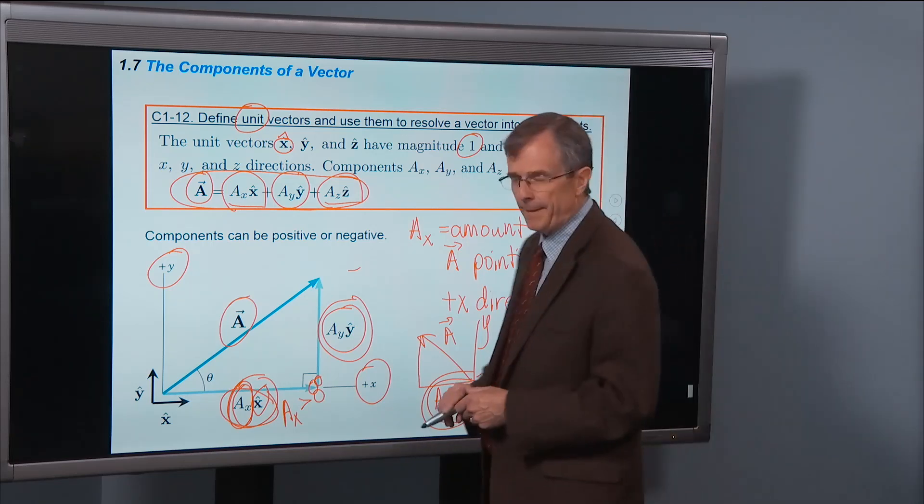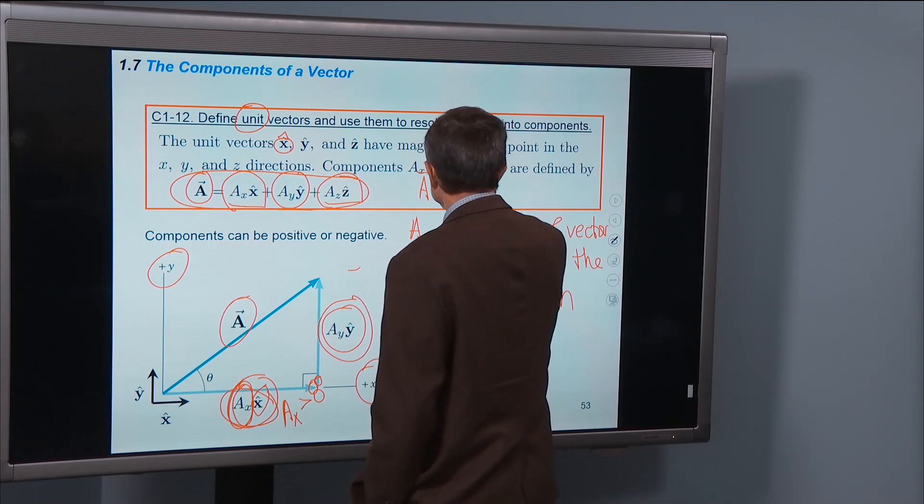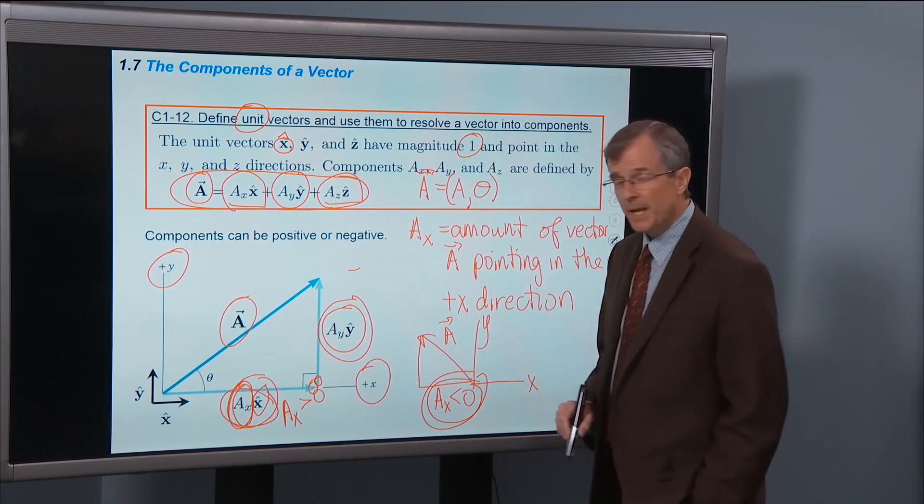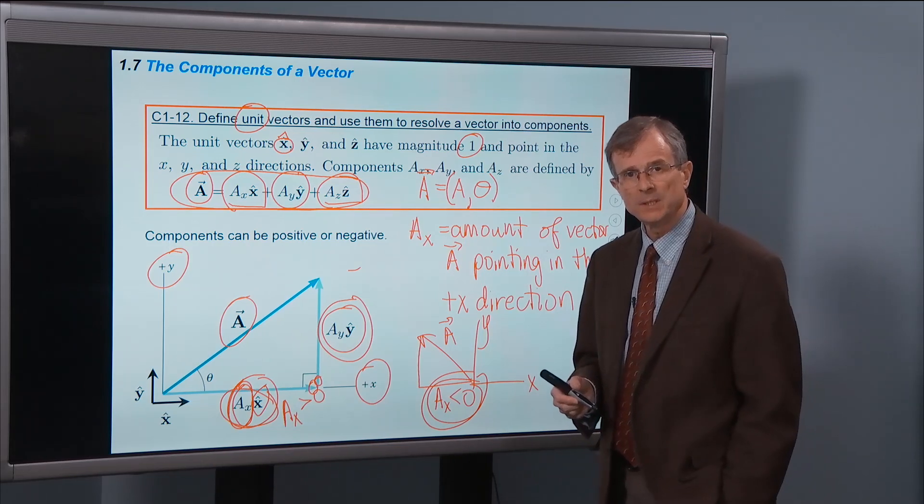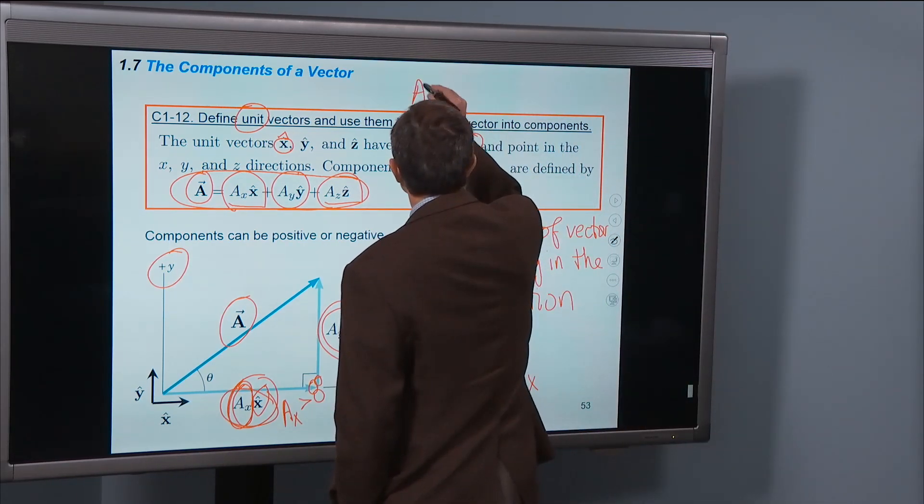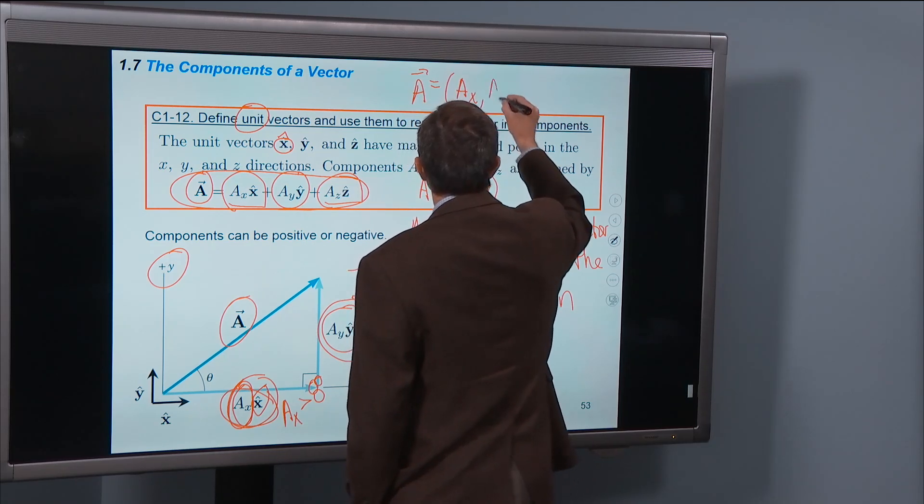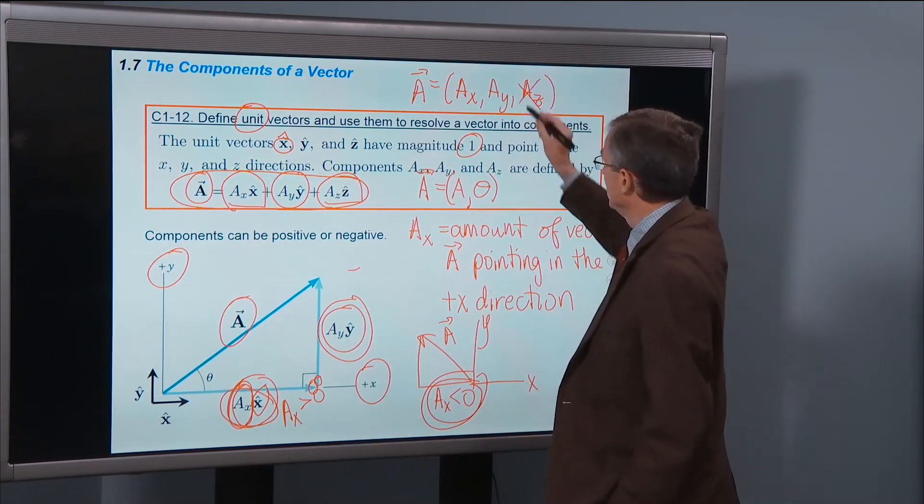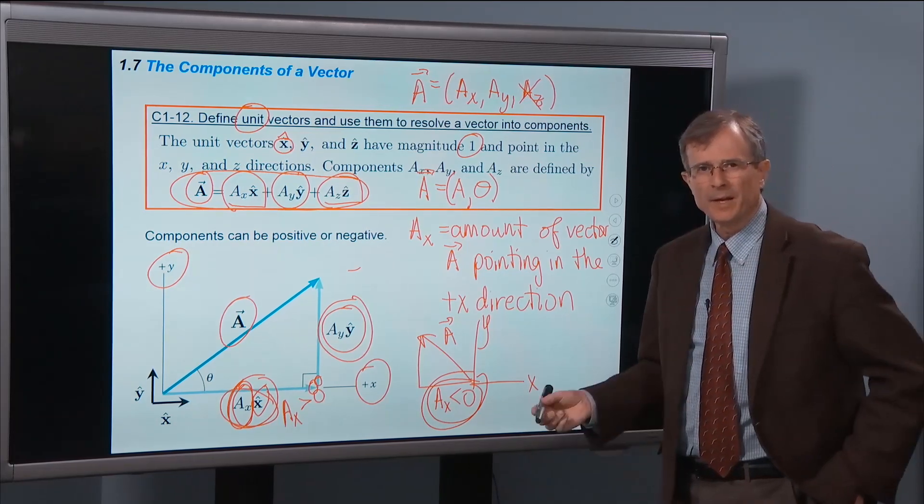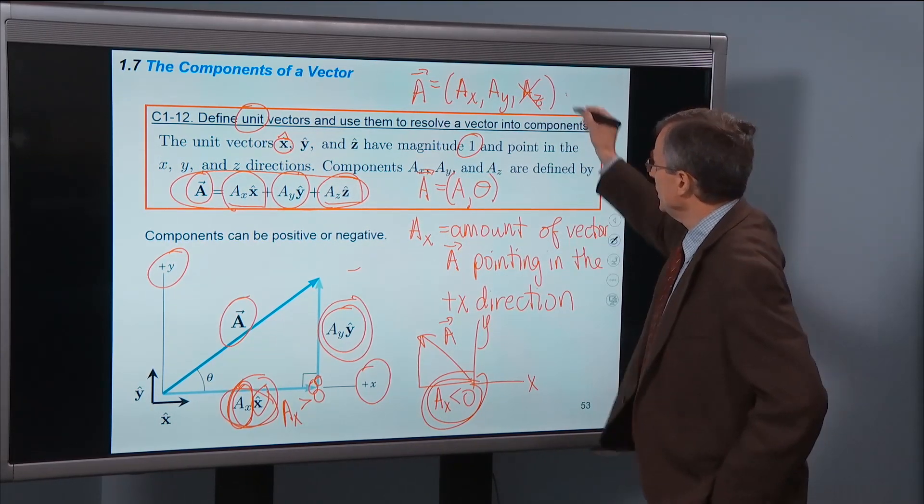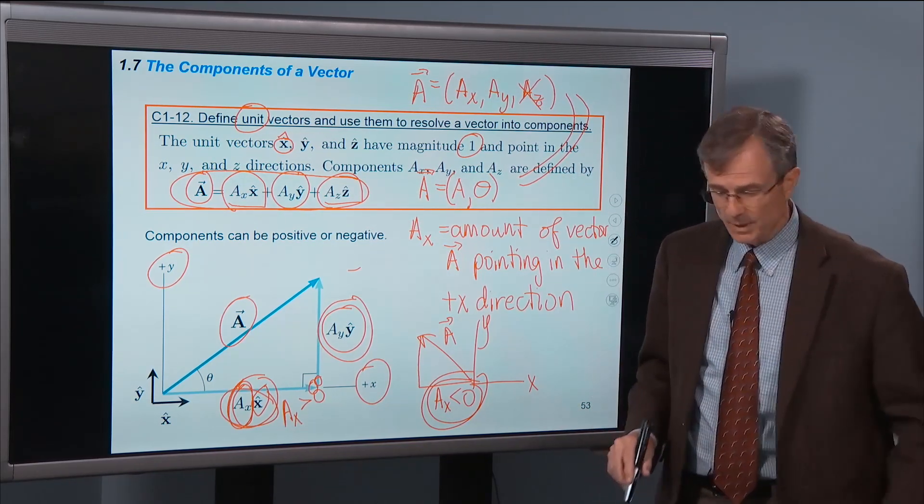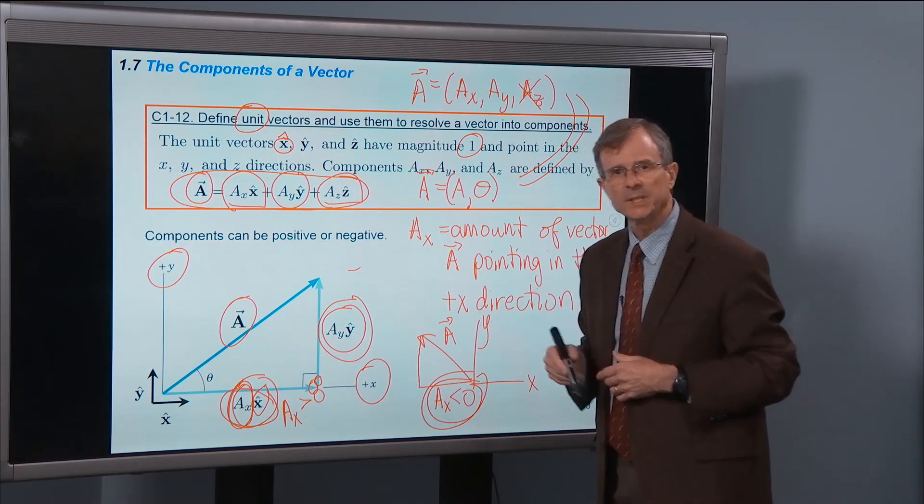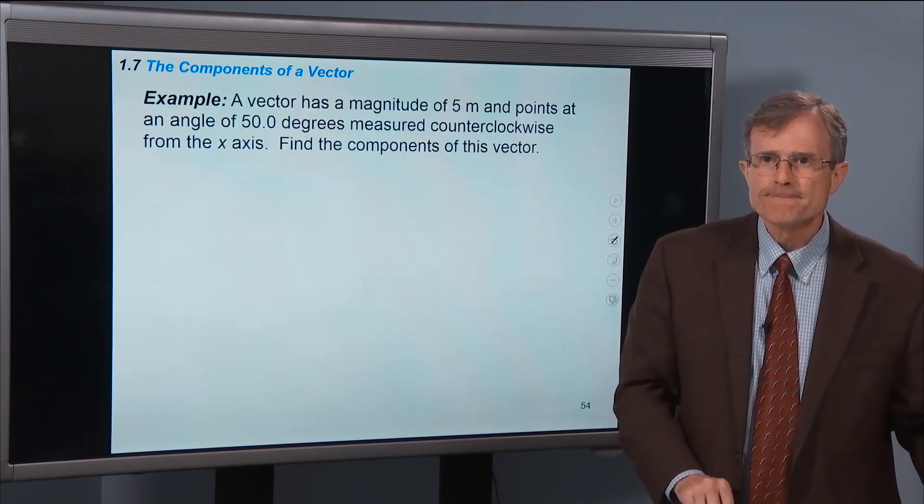But this gives us another way of writing vectors. Instead of writing a vector as its magnitude and its direction, we now can characterize a vector by its three components in the x, y, and z directions. And in many cases, for two dimensional problems, we don't even need to worry about the z component. Most of the problems we'll deal with don't have that z component, they'll just be x and y. So these are two equivalent ways of writing a vector. This is called the magnitude and direction form, and this is called the component form. Both completely specify the vector.